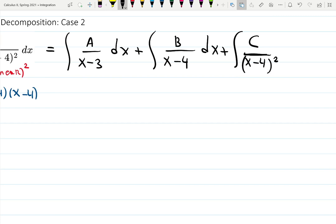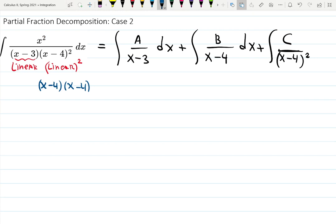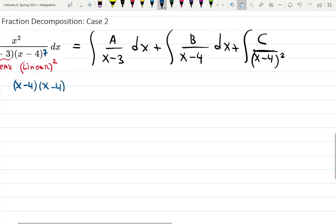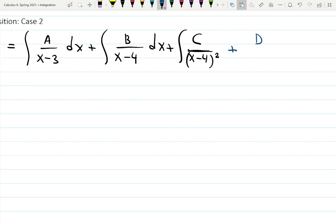Now you can imagine, if it was not squared, but was to the 7, you will keep going with the D over x minus 4 cubed plus E over x minus 4 to the fourth and so on until your alphabet finally reaches the needed exponent. That's why sometimes people like using a1, a2, a3 not to be bothered with the alphabet.